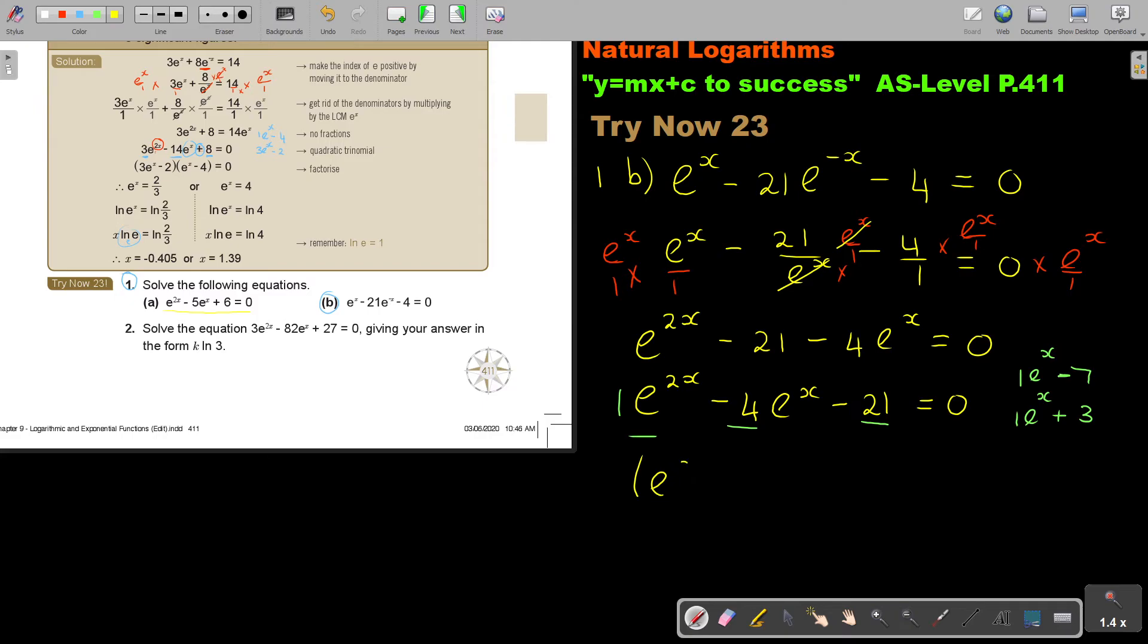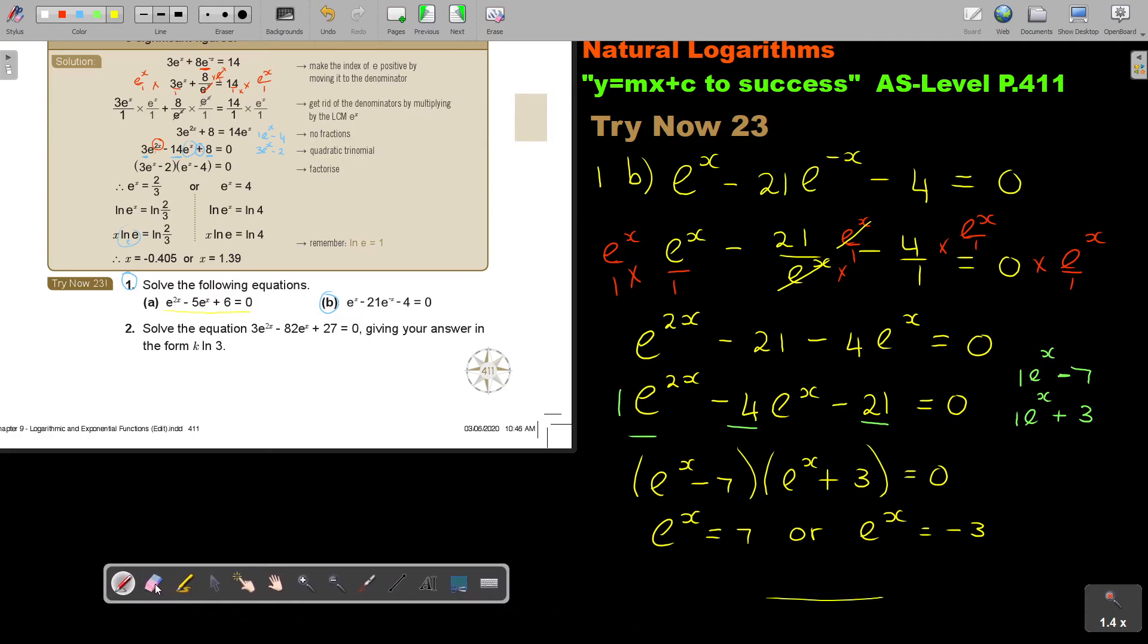e to the power x minus 7. e to the power x plus 3, and that is equal to 0. So, okay, and then, I get e to the power x equals 7, or e to the power x equals negative 3. I just want to move this.